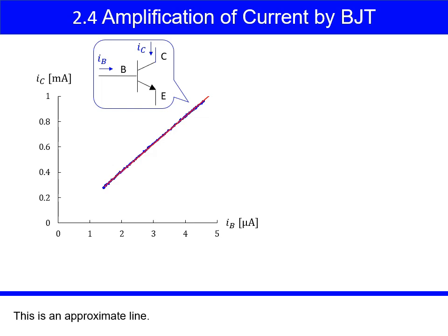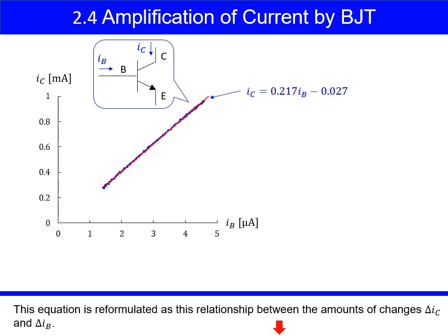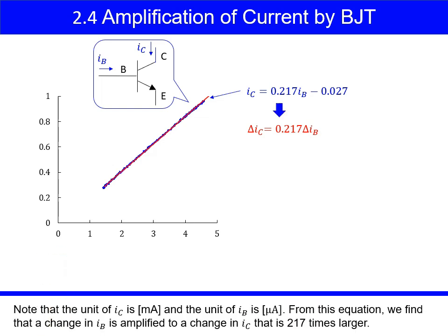This is an approximate line. This line is expressed with this equation. This equation is reformulated as this relationship between the amounts of changes delta Ic and delta Ib. Note that the unit of Ic is the milliampere, and the unit of Ib is the microampere. From this equation, we find that a change in Ib is amplified to a change in Ic that is 217 times larger.